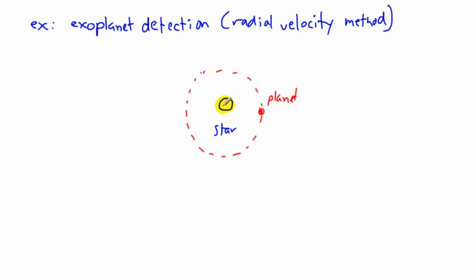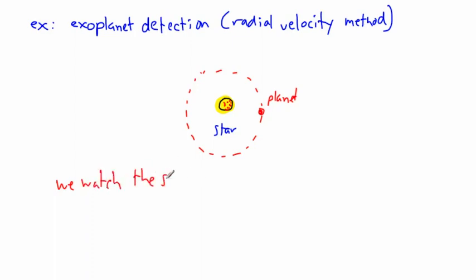The clever solution: the planet and the star form an action-reaction pair. When the planet orbits the star, the star also moves a little bit. Many people imagine the star stays fixed and the planet goes around it — that's not correct. The star actually wobbles. As the planet moves around its orbit, the star's center of gravity shifts slightly, so the star wobbles back and forth in a small circle too.